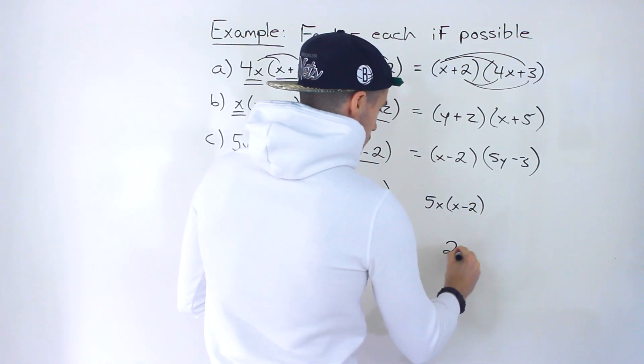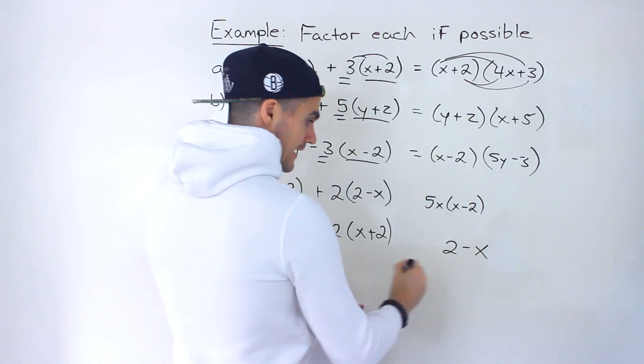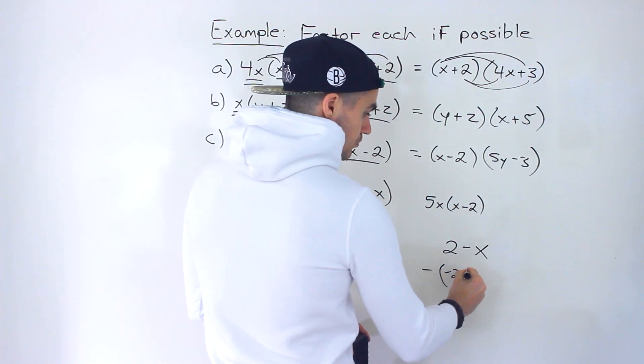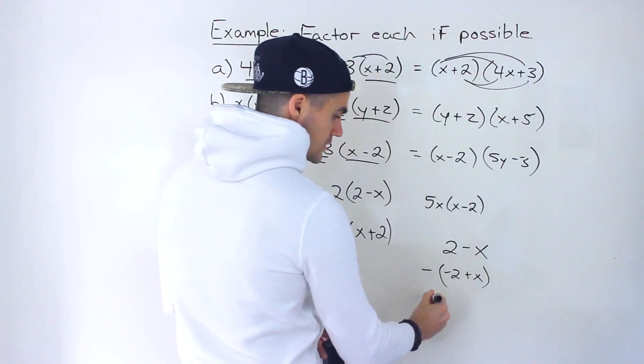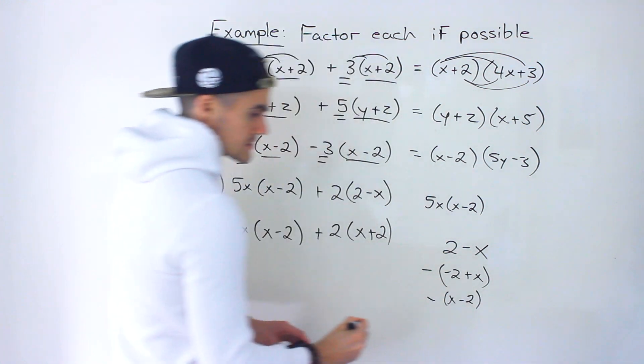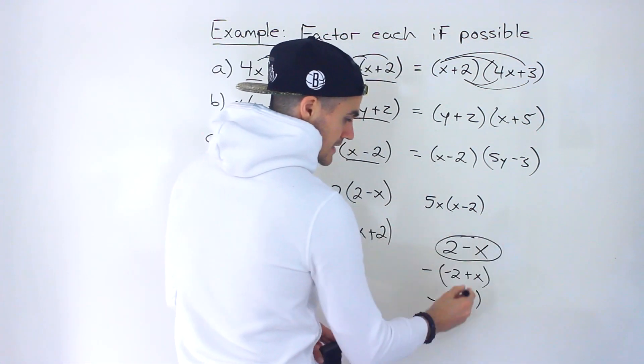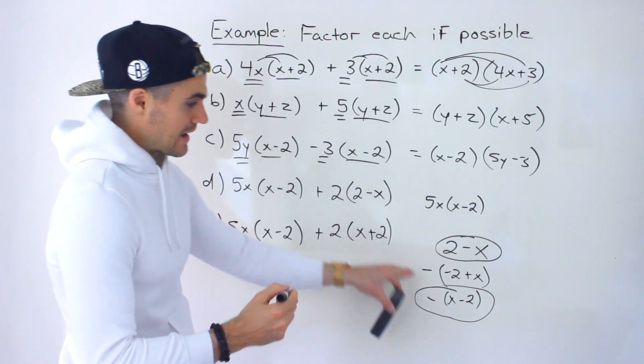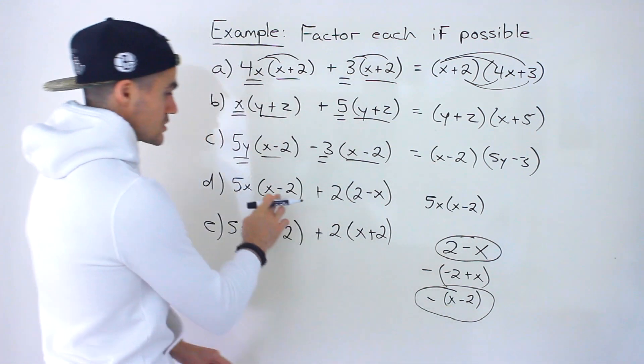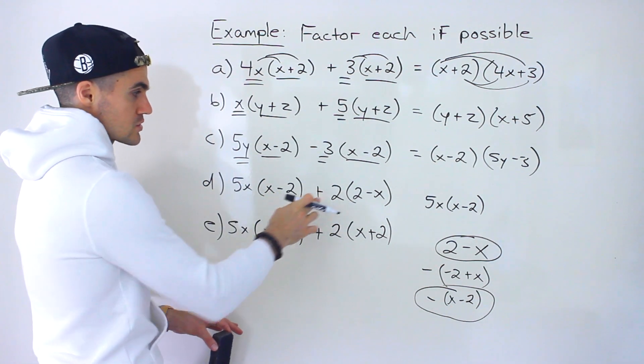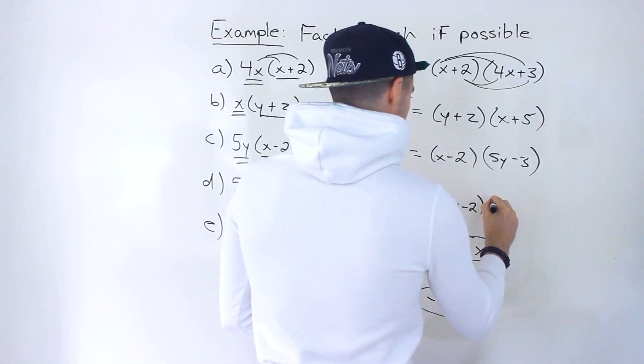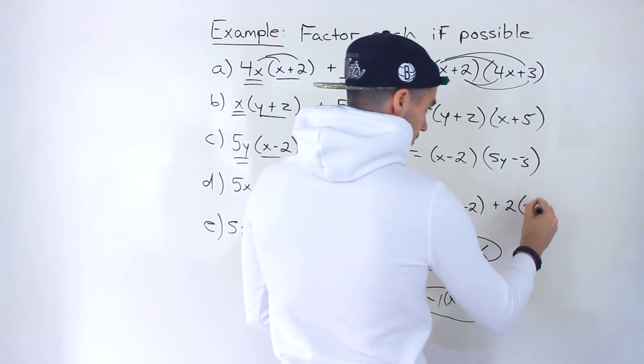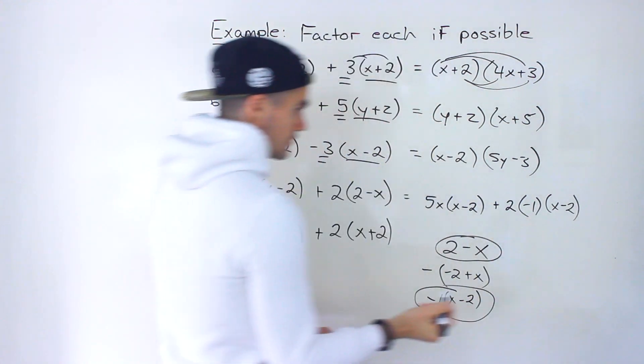So notice that what would happen if we do that, let's actually just work with 2 minus x on its own for a sec. If I take out a negative 1, basically all the signs would change. So we'd end up with negative 2 plus x like that. And then we could rearrange this and it would be x minus 2. So 2 minus x is the same as negative bracket x minus 2. And so what you want to do is you want to take that and convert it here because then you're going to have that x minus 2 that's a common factor.